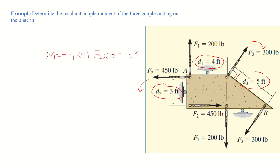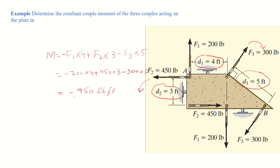So F3 multiplied by 5. Putting in the values: negative 200 multiplied by 4, plus 450 multiplied by 3, minus 300 multiplied by 5. The answer is negative 950 pound-feet. The negative sign indicates that it is a clockwise moment.